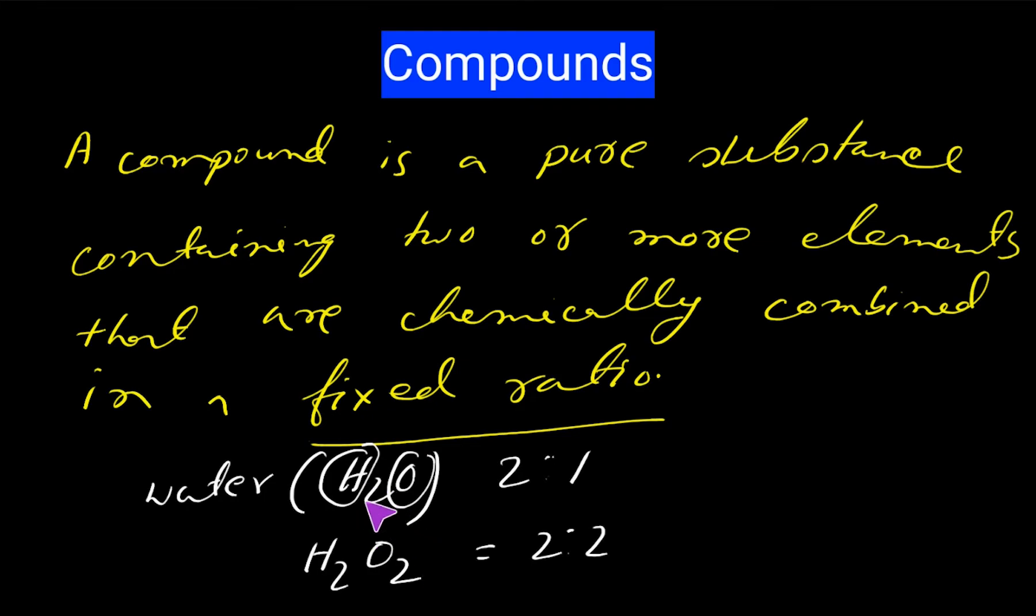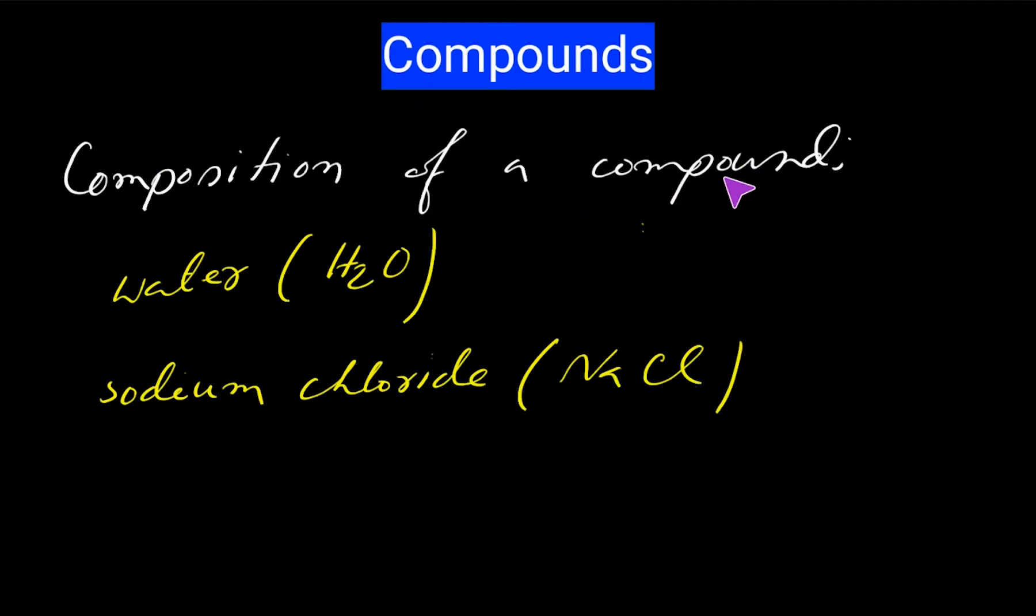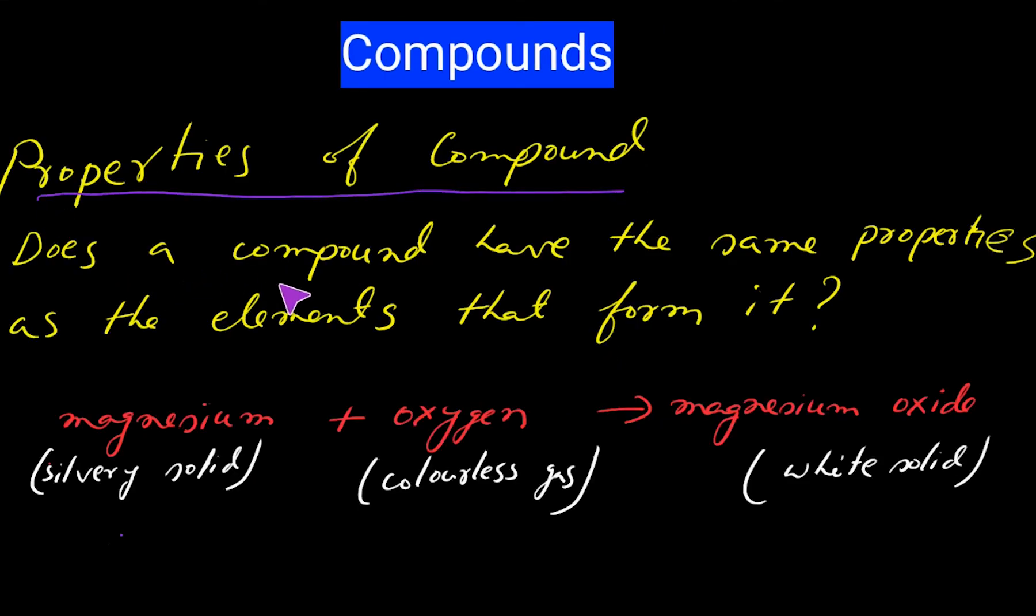Composition of a compound: A compound may be made up of molecules or another type of particles called ions. Ions are electrically charged particles. An ion carries either positive or negative charge. Water is a compound made up of water molecules. Sodium chloride is a compound made up of positive sodium ions and negative chlorine ions.